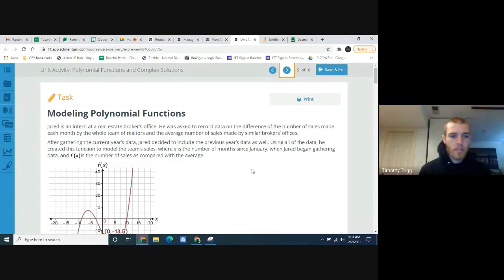Modeling polynomial functions. Jared is an intern at a real estate brokerage office. He was asked to record data on the difference of the number of sales made each month by the whole team of realtors and the average number of sales made by similar brokers offices. After gathering the current year's data, Jared decided to include the previous year's data as well.